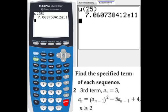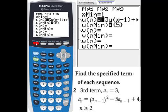Let's look at one more example. We want to figure out third term for this recursive sequence. So let's go to y equals this time and clear for u sub n.